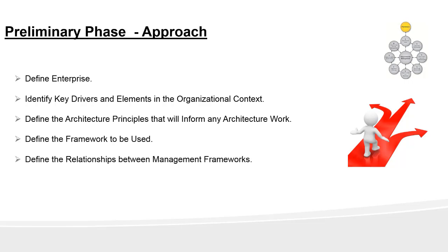The next aspect is defining the relationship between management frameworks. There could be multiple frameworks that coordinate with TOGAF, such as business capabilities, operations, IT, and solution development methods. The last aspect is evaluating the architecture capability. Capability maturity models (CMMs) are a good way of assessing the ability of an enterprise to develop different capabilities. That covers the approach, and in the next section we will look at the steps.